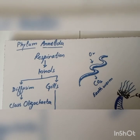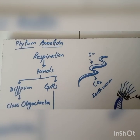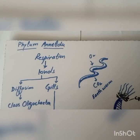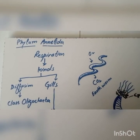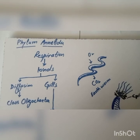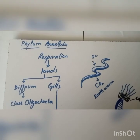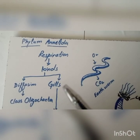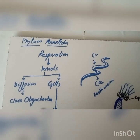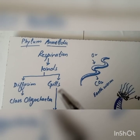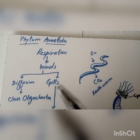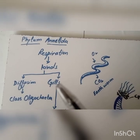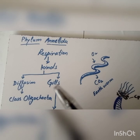Respiration in phylum Annelida. Annelids have two kinds of respiration depending upon their classes: number one is diffusion, while the second one is through gills.